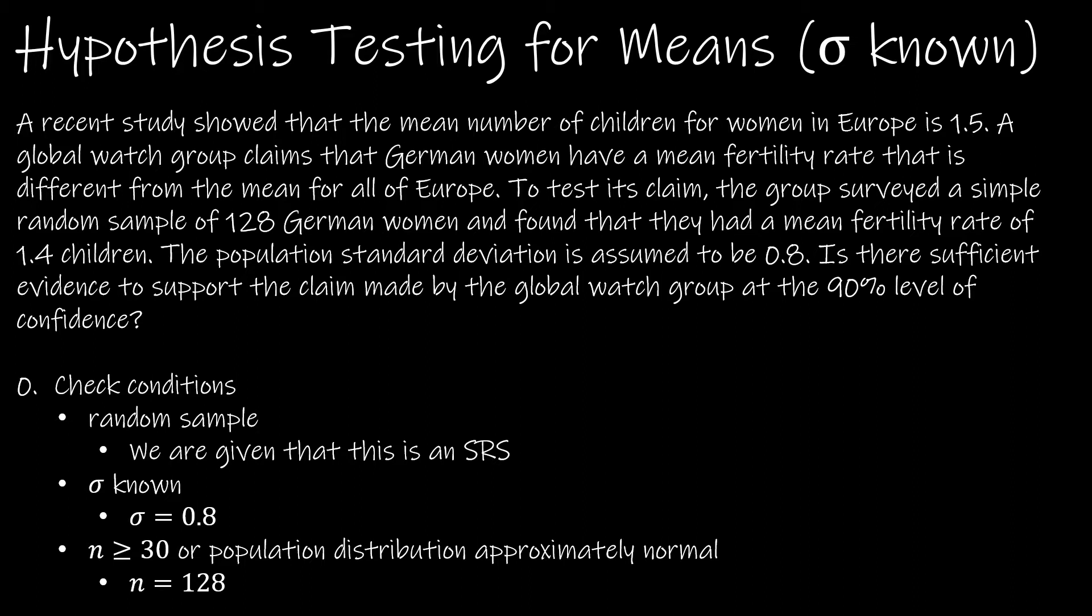So let's read the question and check conditions. As we're reading the question, as always, I'm going to write down the important information. A recent study showed that the mean number of children for women in Europe is 1.5. So mean is equal to 1.5, which also means the null hypothesis is that the mean is equal to 1.5.